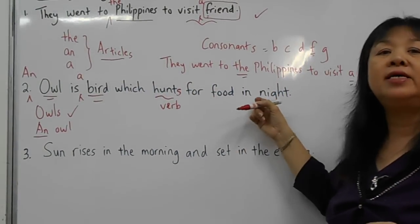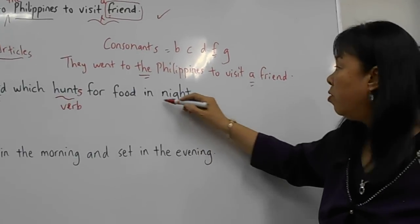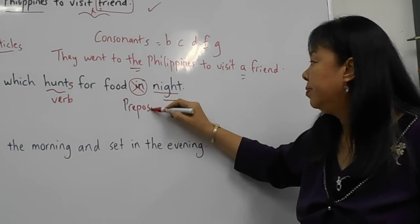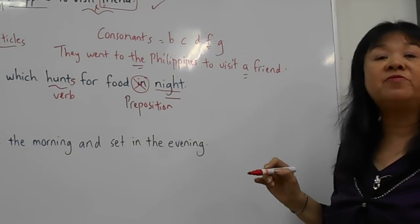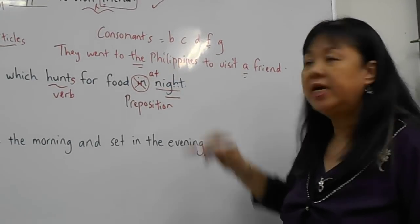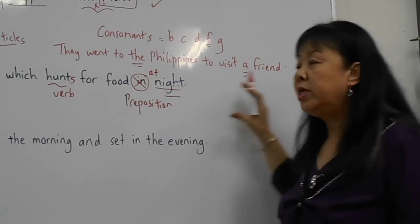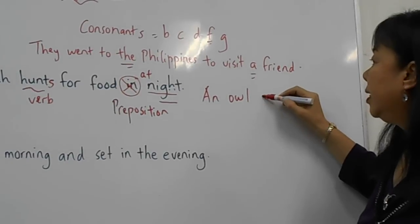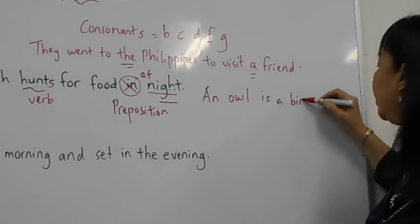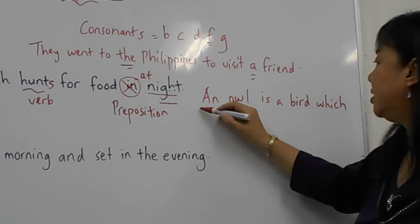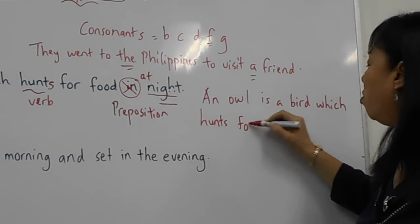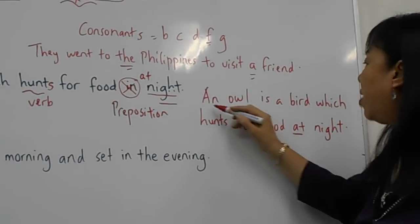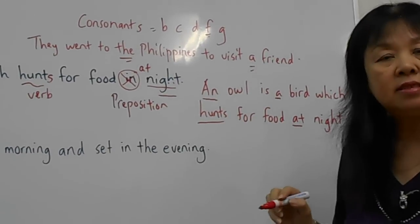There is also another error: we do not say 'in night' — this is a mistake in preposition. The correct preposition for night is 'at,' so it is 'at night,' not 'in night.' Therefore the whole sentence, grammatically correct, should be: 'An owl is a bird which hunts for food at night.' All these grammar mistakes made the original sentence wrong.